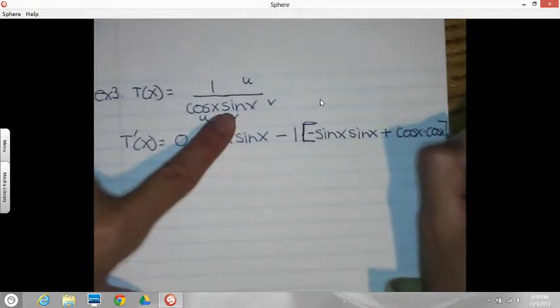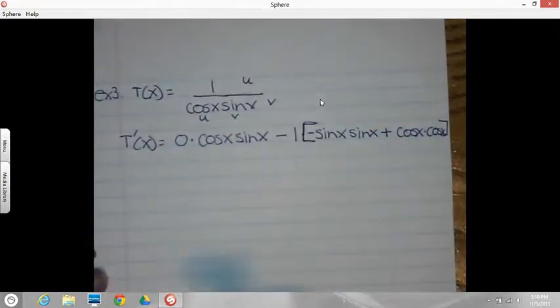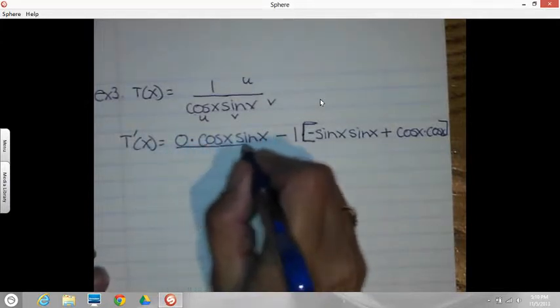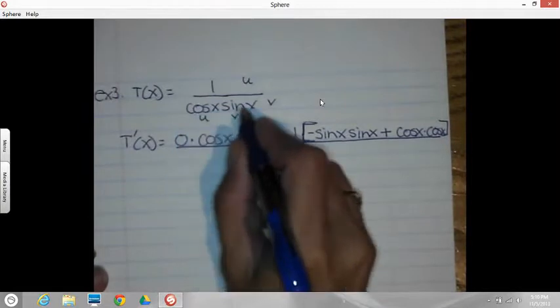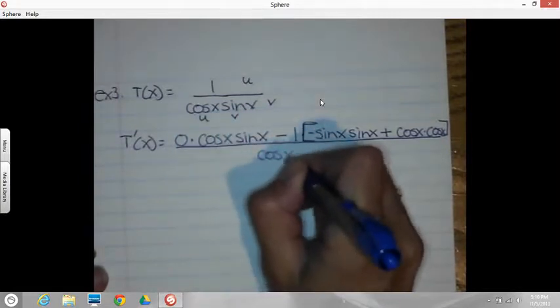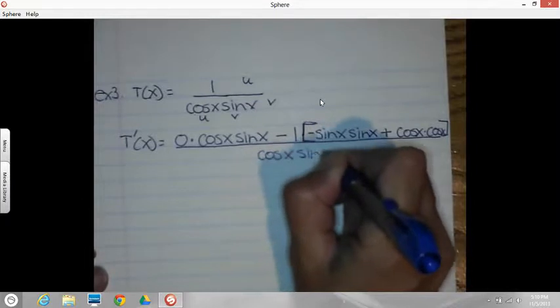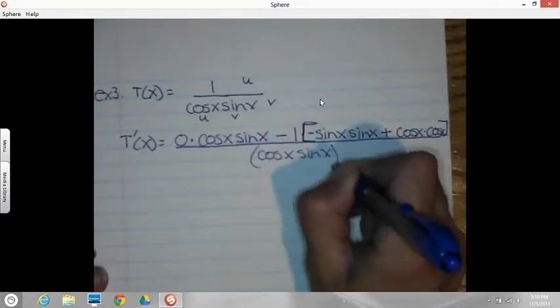And then this is all over, remember I'm still doing a quotient rule to start with, the bottom squared, the whole bottom squared.